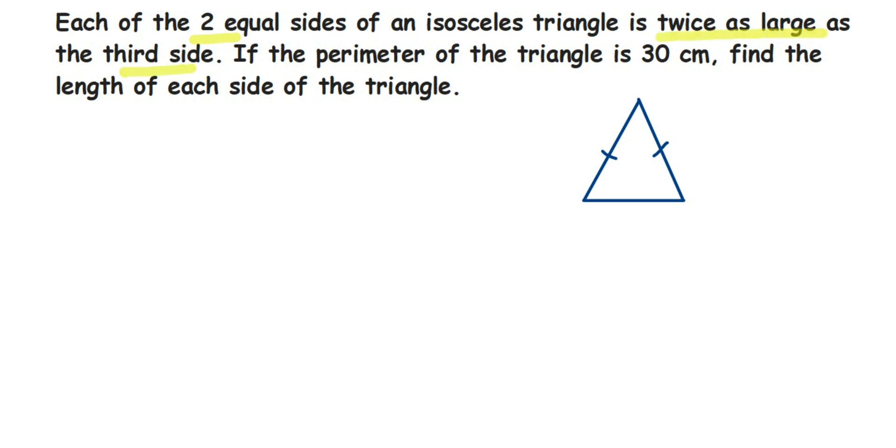So the third side will be this side and this side measurement will be different than these two. So this side and this side will be equal and this side will be different. And they have given the relationship that the equal sides are twice, means they are double of the third side.